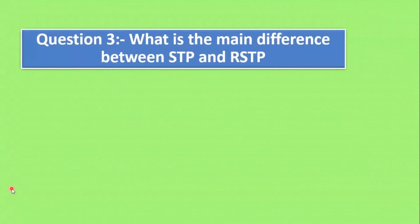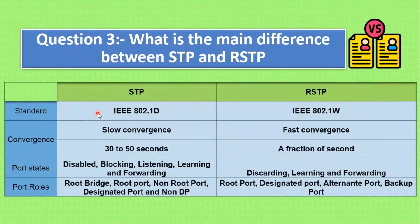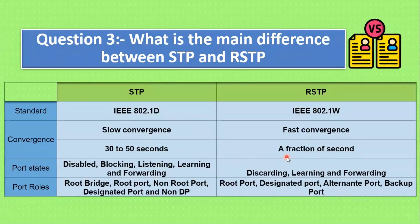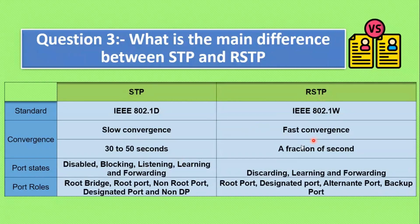Question 3: What is the main difference between STP and RSTP? The standard for STP is IEEE 802.1D and for RSTP it is 802.1W. For convergence, STP is slow — taking 30 to 50 seconds — while RSTP converges within a fraction of seconds, maximum 6 seconds. For port states, STP has five: disabled, blocking, listening, learning, and forwarding. RSTP has only three — blocking and listening are bypassed, saving around 30 seconds.